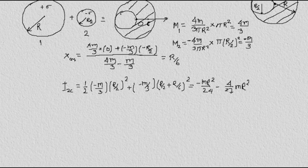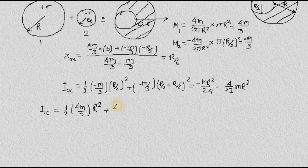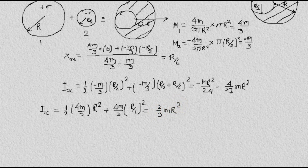Similarly, we calculate the moment of inertia of the large disc with respect to point C. The mass of the bigger disc is 4m/3 and its radius is R. So I₁C = (1/2)(4m/3)R² + (4m/3)(R/6)², which gives (2/3)mR² + 4mR²/(3×36), simplifying to 2mR²/3 + mR²/27.